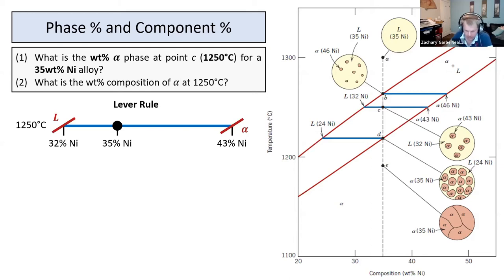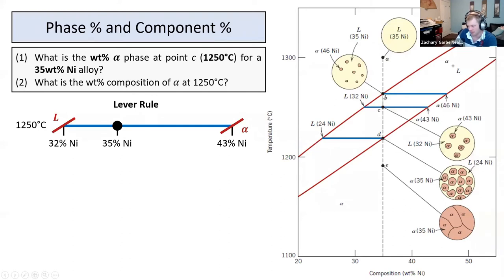We got answers of 73% and 27%. Looking at this, we can figure out which is right. If we start from the liquid phase and hit point B, it's 100% liquid, and then we just start precipitating — so about 1% solid. We should have less solid than liquid at this point. So it's 27% solid.